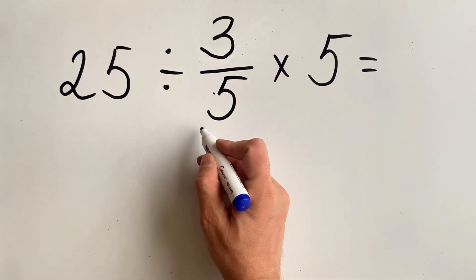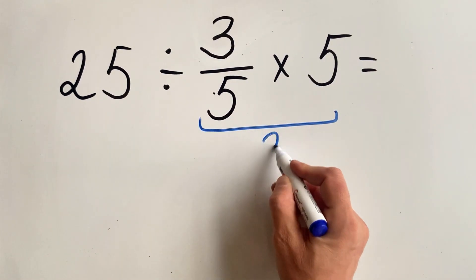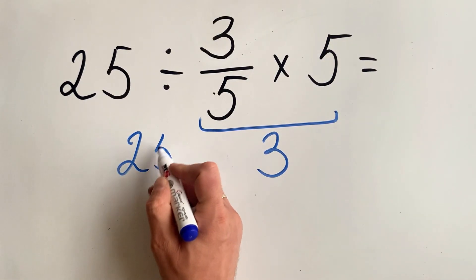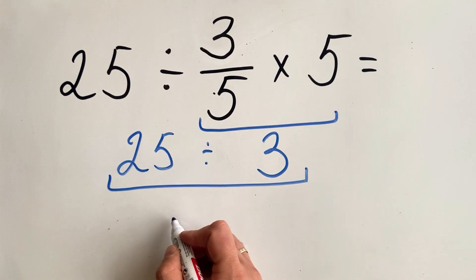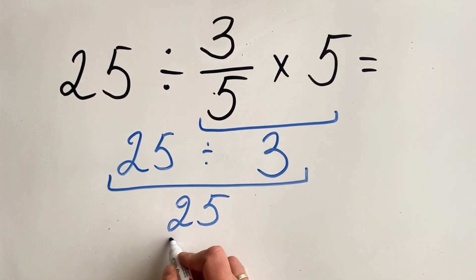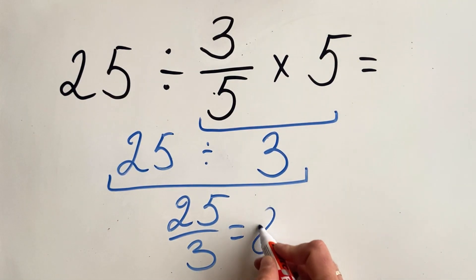3 over 5 multiplied by 5 equals to 3, and 25 divided by 3 equals to 25 over 3, and equals to 8 and 1 third.